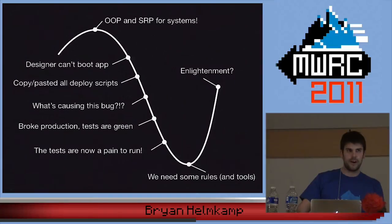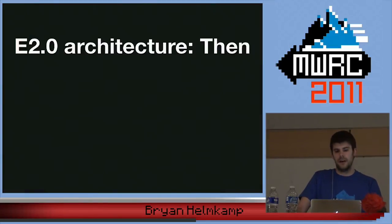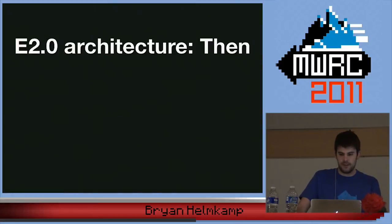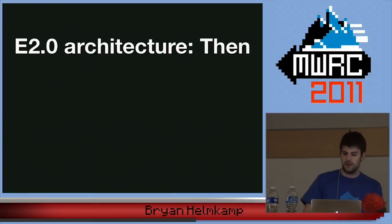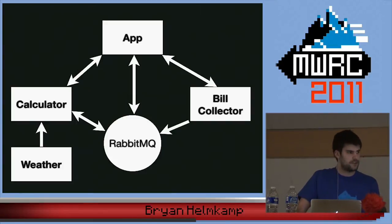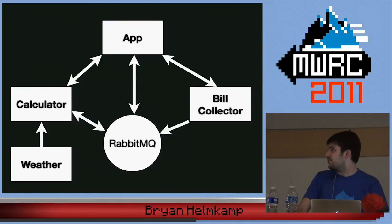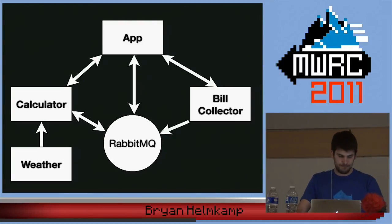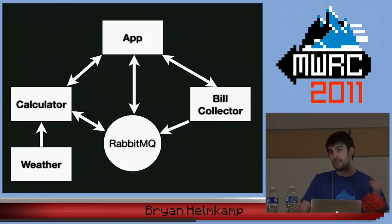A little bit of background about our project. Efficiency 2.0 has a team of about five people, and the code has been around in various forms for one or two years. When I joined about a year ago, we had a front-end user-facing application — pretty standard — and then three services supporting that, connected in some cases with RabbitMQ. We had a bill collector that pulls in data from our clients, who are electric utilities.